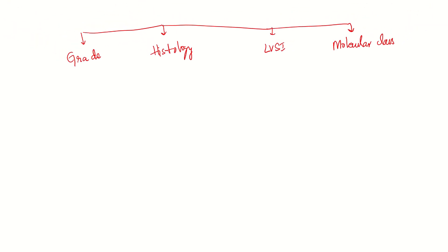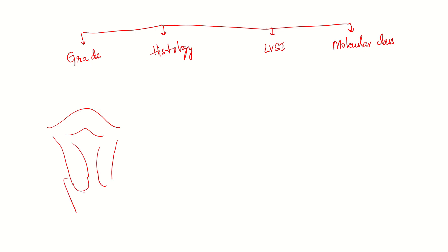Hi guys, today we'll see the FIGO staging of carcinoma endometrium — the latest one. Let's start with a clinical case scenario: a 50-year-old lady presents with postmenopausal bleeding. We perform an ultrasound or transvaginal sonography and find that the endometrial and myometrial thickness is altered, or there is altered ecotexture.